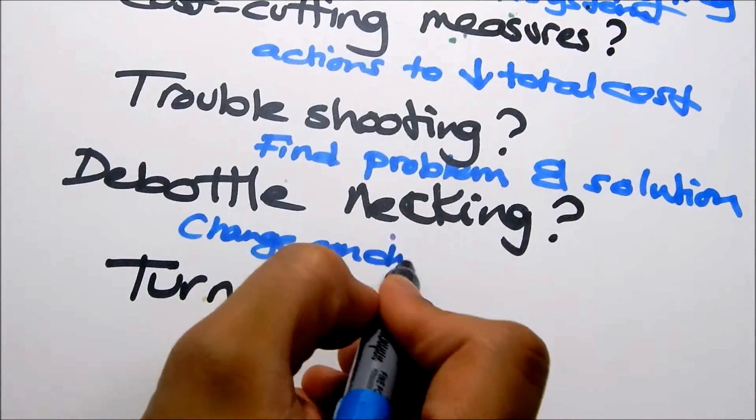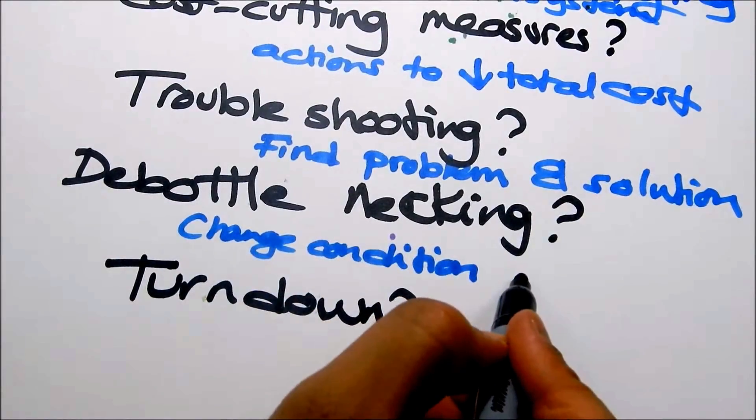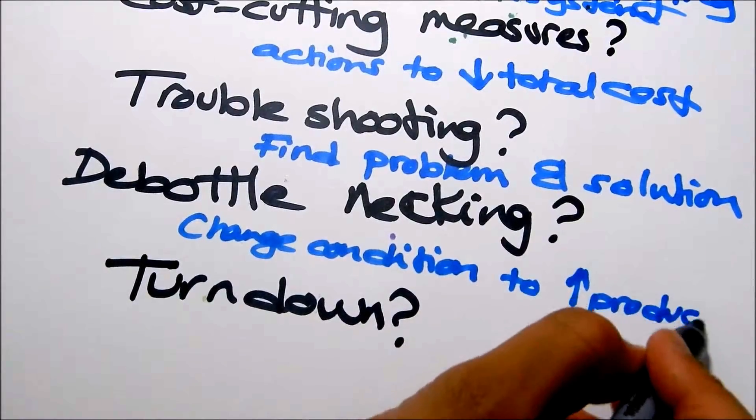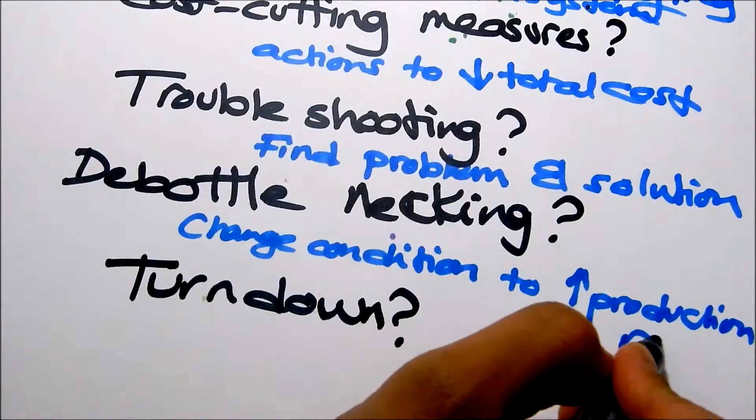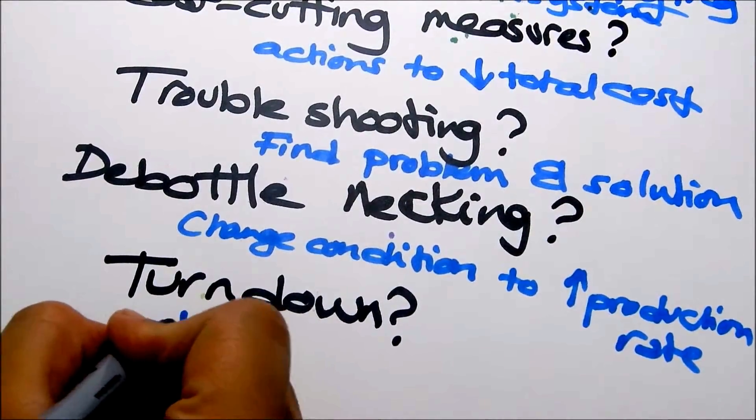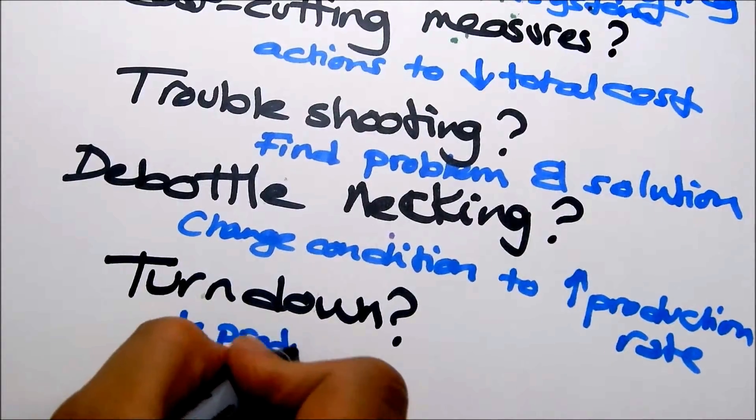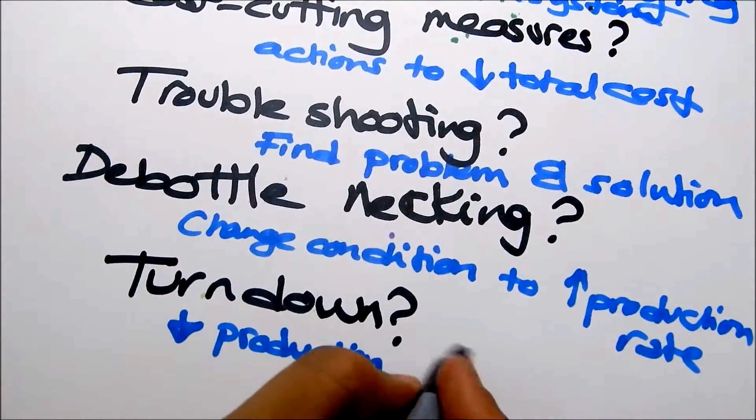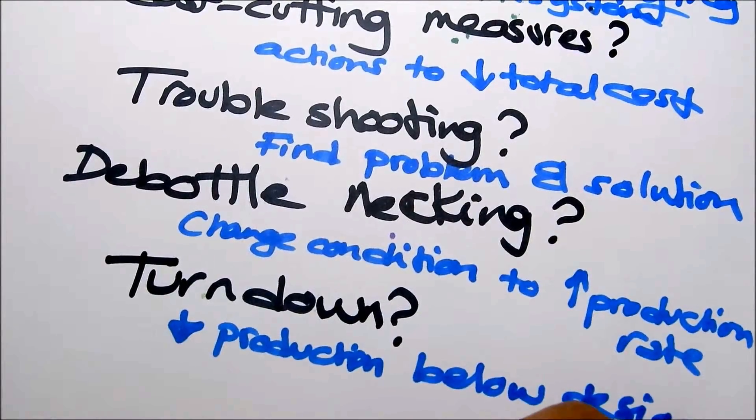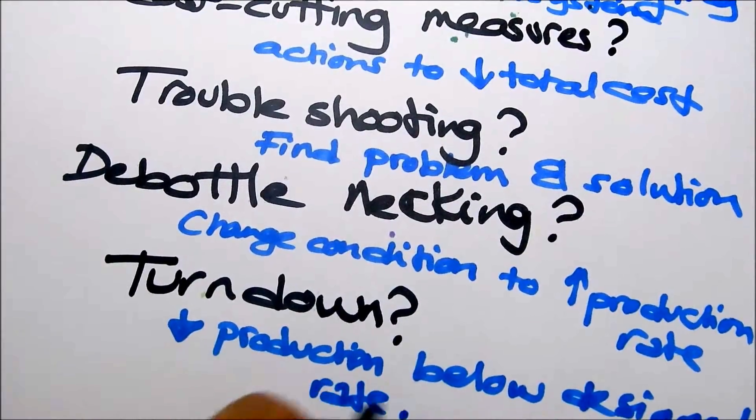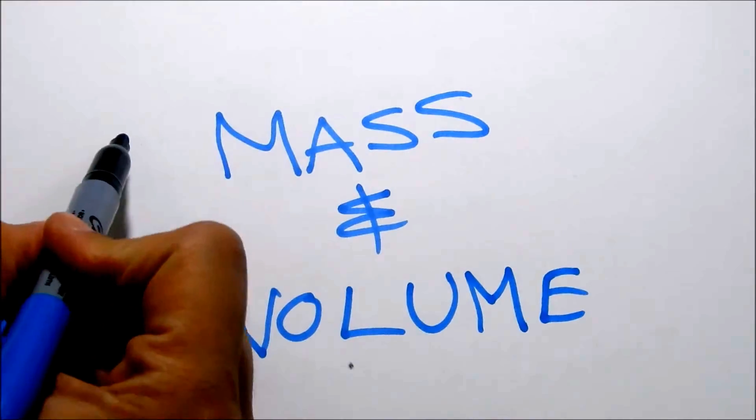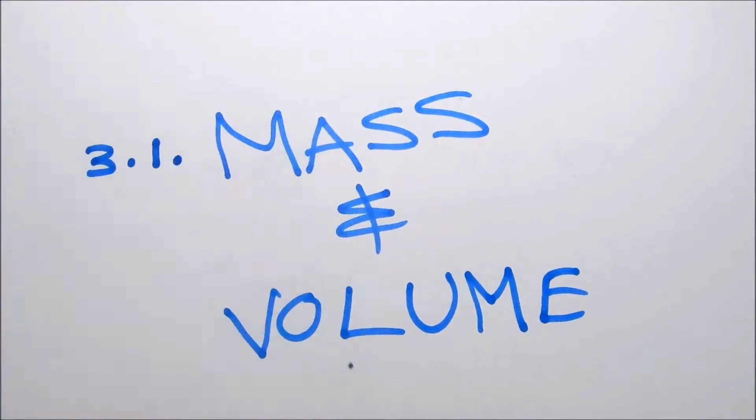Debottlenecking is to reverse production, which is the lowering of the production below the desired or the design rate. Turndown is also the lowering of production below what we designed the system for.